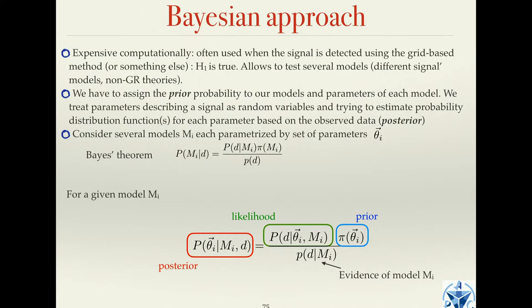You always have some information about the prior — it might be non-informative, going from minus infinity to plus infinity in the worst case, but you almost always have some bounds. Your posterior depends on your prior knowledge. Some people think this is a weakness of the Bayesian approach; some think it's a strength. My prior information might differ from yours, and you might get different answers — but this is encoded in the theory. That's what it says.